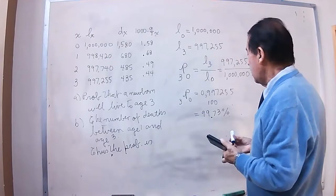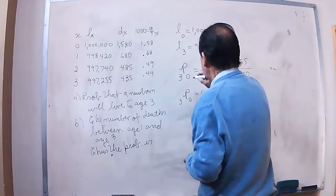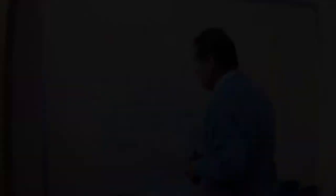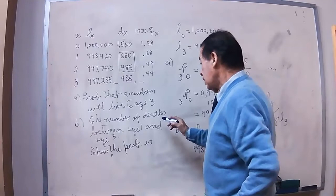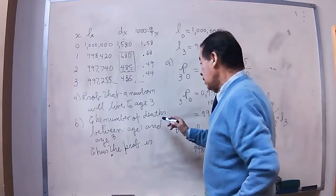Now, we are going to see letter B. This will be the result of letter A. For letter B, in letter B, they are asking us the number of deaths between age 1 and age 3. This is age 1, and this is age 3.